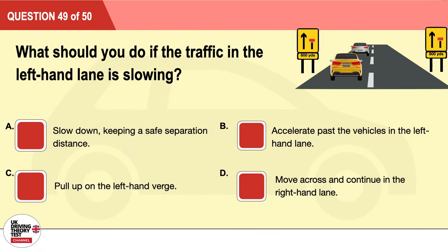Question 49: What should you do if the traffic in the left-hand lane is slowing? A: Slow down keeping a safe separation distance. B: Accelerate past the vehicles in the left-hand lane. C: Pull up on the left-hand verge. D: Move across and continue in the right-hand lane. The correct answer is A: slow down keeping a safe separation distance.